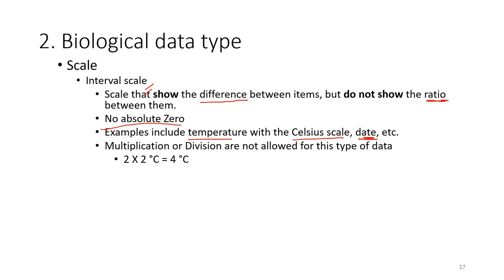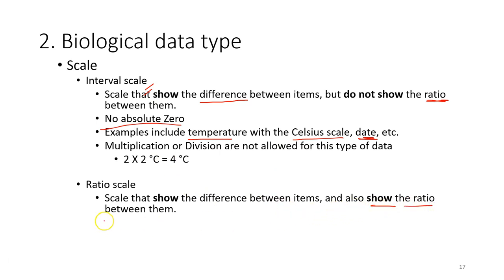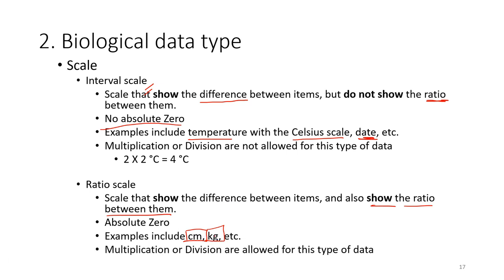The other type of scale data is ratio scale. This is the one that is more common and you are familiar with. The ratio scale data shows the difference between the items as the interval scale, and also shows the ratio between them, and it has an absolute zero. For example, the metric system: centimeter, meter, kilogram. In this case, the multiplication and also divisions are allowed.